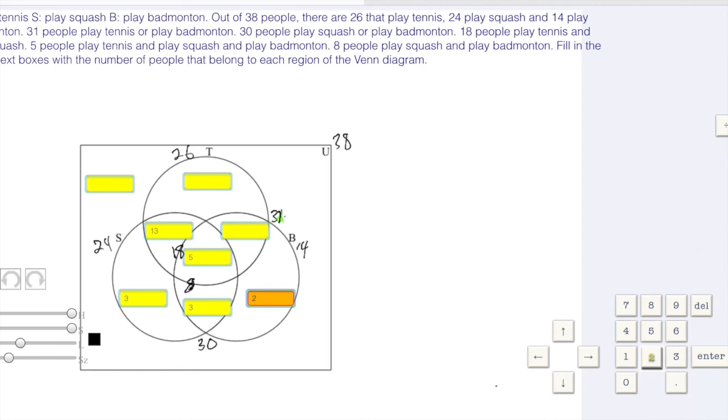We can do the same thing for up here. We know that there's 14 in the badminton circle. We need to get to 31. So 14 plus 13 is 27 plus 4 is 31, so that has to be a 4.